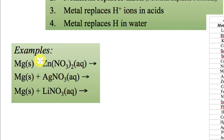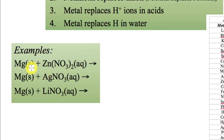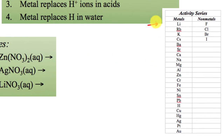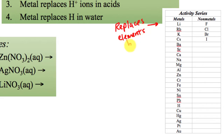Here's an example. I can identify this as a single replacement reaction because I have a single element reacting with a compound. To know if the reaction will work, I have to use something called the activity series. The activity series is what we use to figure out if single replacement reactions work. At the top of the series is the most active metal — the metal at the top replaces everything below it. Elements at the bottom cannot replace the ones above them.